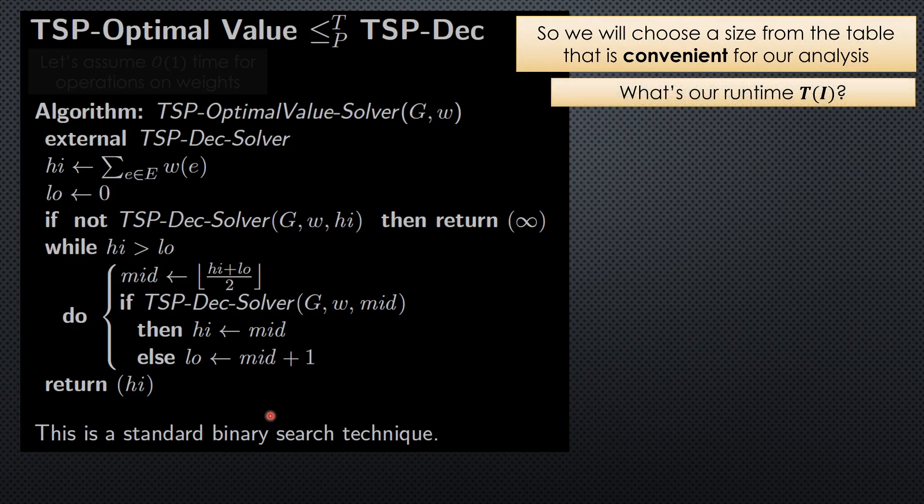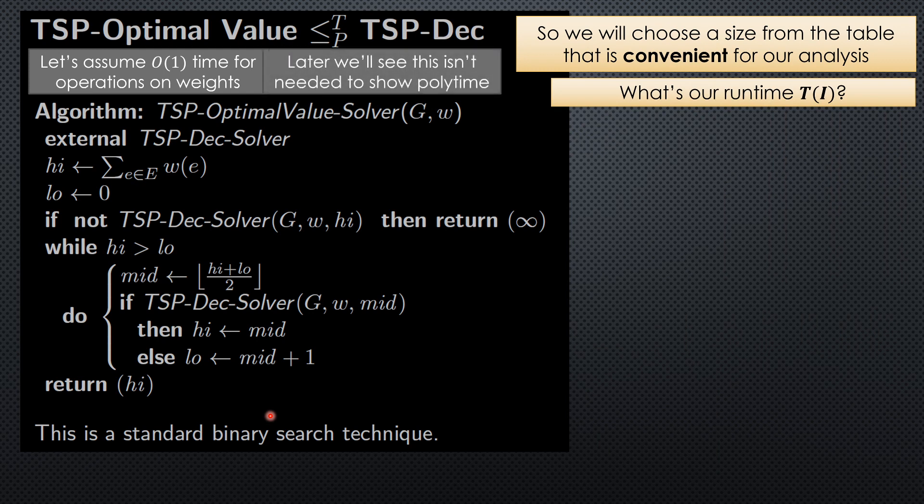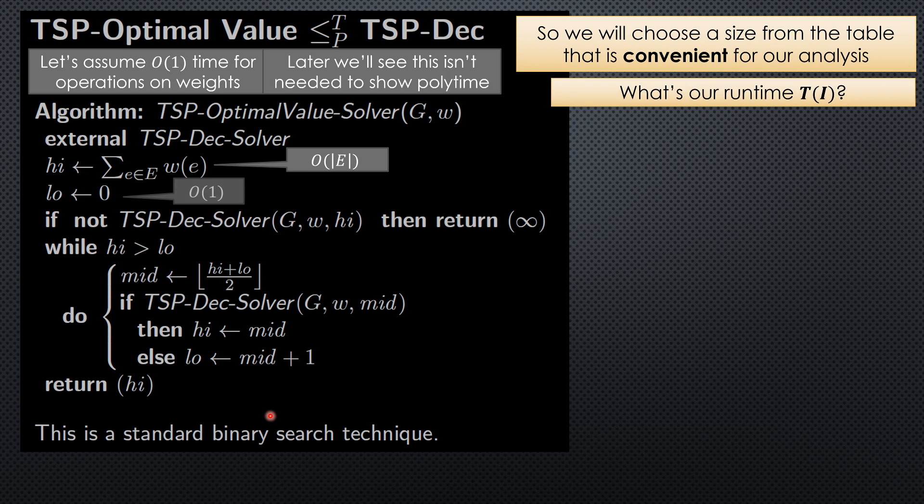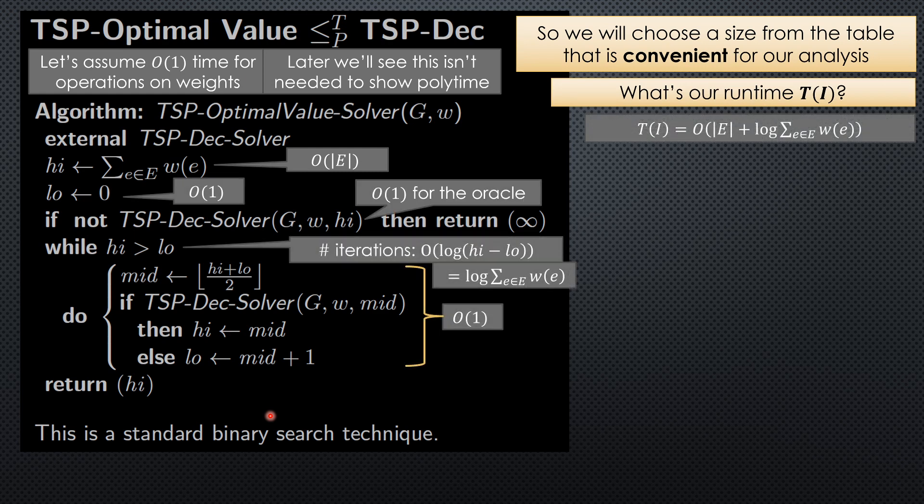So let's go to this analysis and see what I messed up. What's our runtime? Remember, we're assuming unit cost operations on weights. So here are all the various costs that we had, and our runtime was order number of edges plus this log of the sum of weights. So that's true, because where does this log of sum of weights come from? It comes from this term, high minus low, which is 0. So high minus low is just this term. And the log of this is the log of the size of the range we're binary searching.